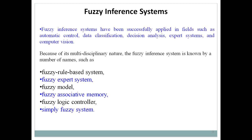This fuzzy inference system is multidisciplinary in nature, so it is known by different terms. It is also called a fuzzy rule-based system, fuzzy expert system, fuzzy model, fuzzy associative memory, fuzzy logic controller, or simply a fuzzy system. These are the different names by which you can identify a fuzzy inference system.